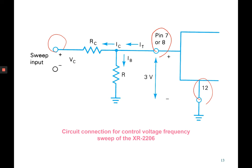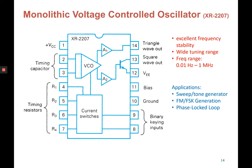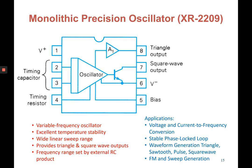Next is the monolithic voltage controlled oscillator or VCO with model number XR2207. It has 14 pins and inside the IC we have current switches, two amplifiers, and a VCO. This IC has excellent frequency stability and a wide tuning range. The frequency range is 0.01 Hz up to 1 MHz, and it is widely used in sweep or tone generators, FM and FSK signal generation, and as a phase-locked loop.